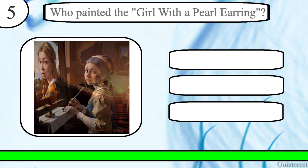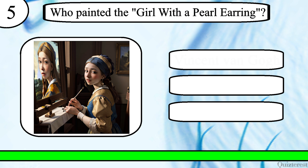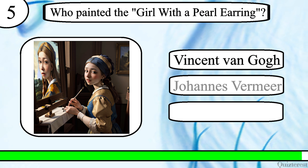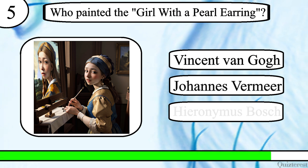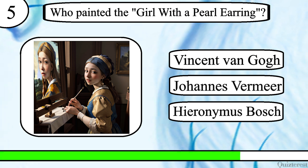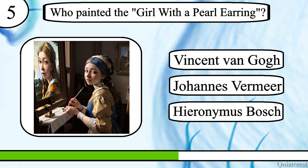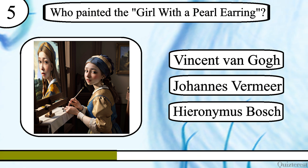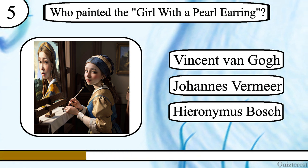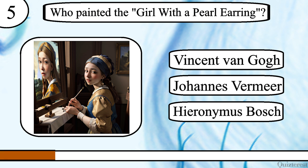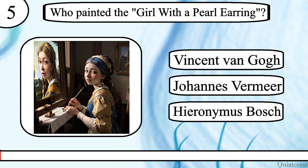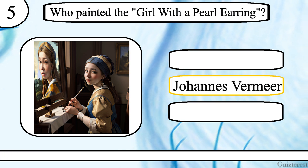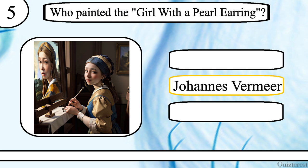Question 5. Who painted the Girl with a Pearl Earring? Vincent van Gogh, Johannes Vermeer or Hieronymus Bosch? The correct answer is Johannes Vermeer.